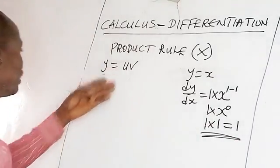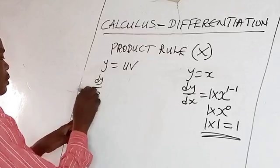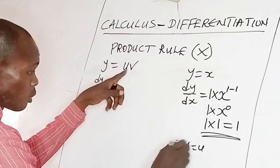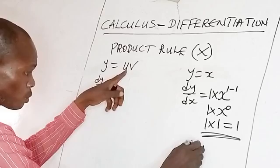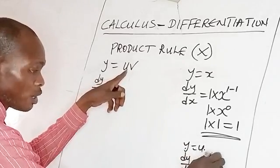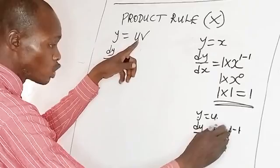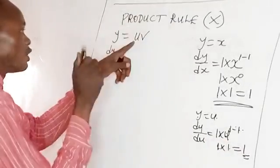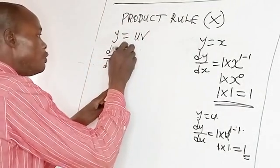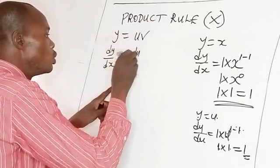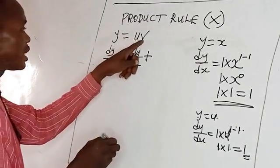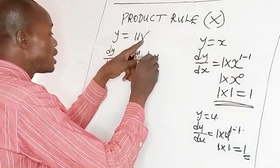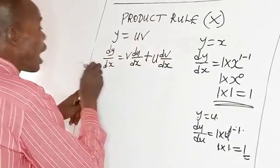In the same way, if y equals u, then dy/du equals 1 times u raised to power 1 minus 1, which is u raised to power 0, and that equals 1. So if you differentiate u it gives 1, and 1 times v is v, so you write v times du/dx. Similarly, differentiating v gives 1, and 1 times u is u, so you add u times dv/dx. This is the formula for the product rule.